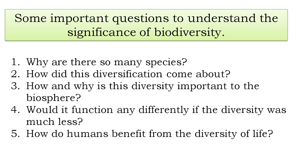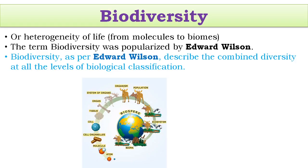How do we define biodiversity? The term itself is a combination of two words: 'bio' means life forms, 'diversity' means variations. So variations in life forms is called biodiversity. We can also call biodiversity the heterogeneity of life — 'heterogeneous' meaning different — so different forms of life or variations in life forms.